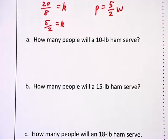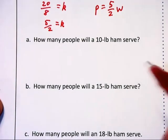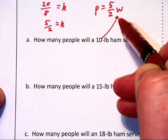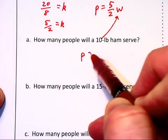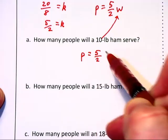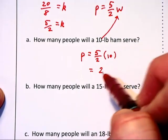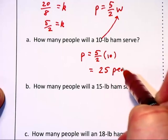Now let's solve the second part of this problem. How many people will a 10 pound ham serve? Well, 10 pounds is the weight, so P will equal 5 halves times 10. That's 50 over 2, so that will be 25 people.